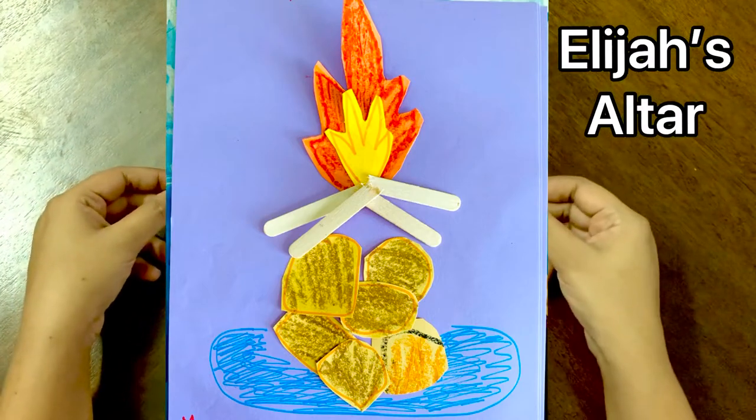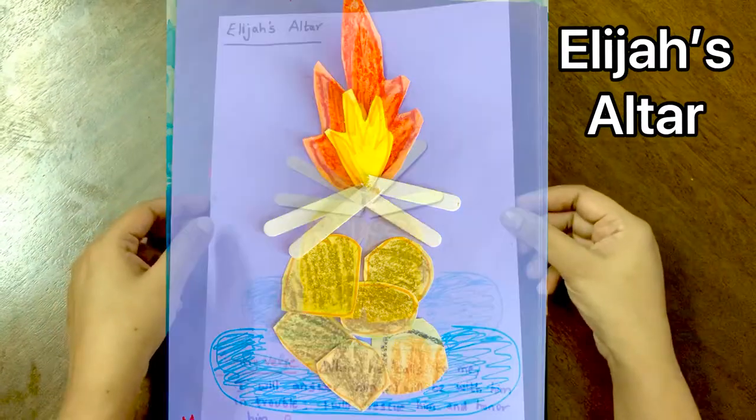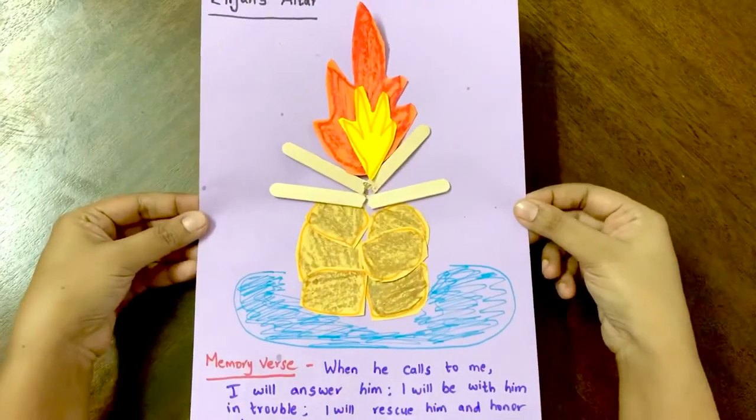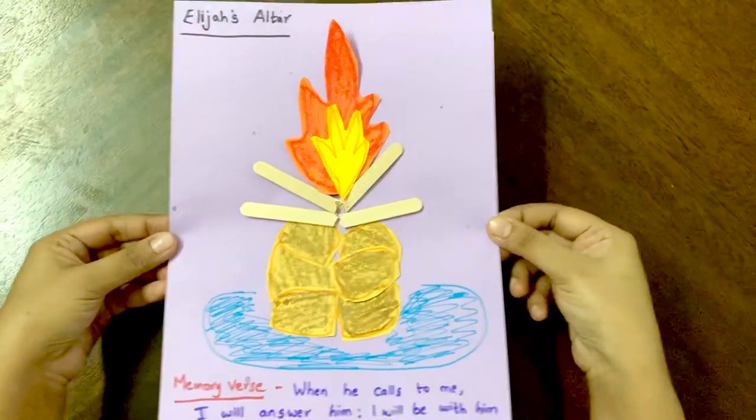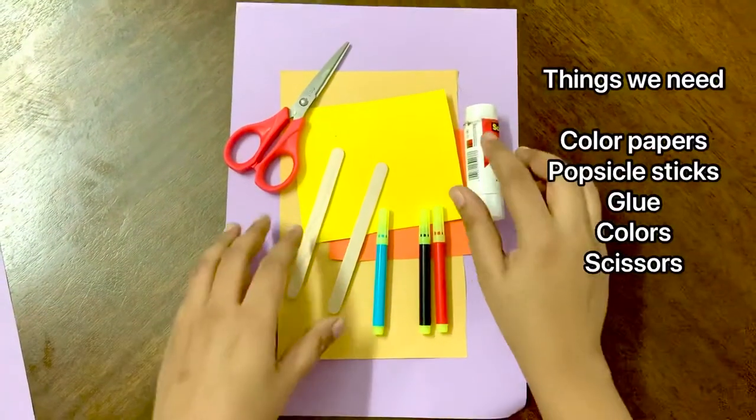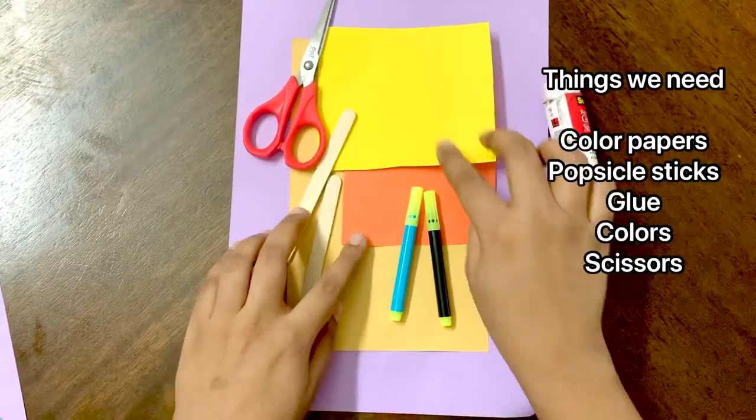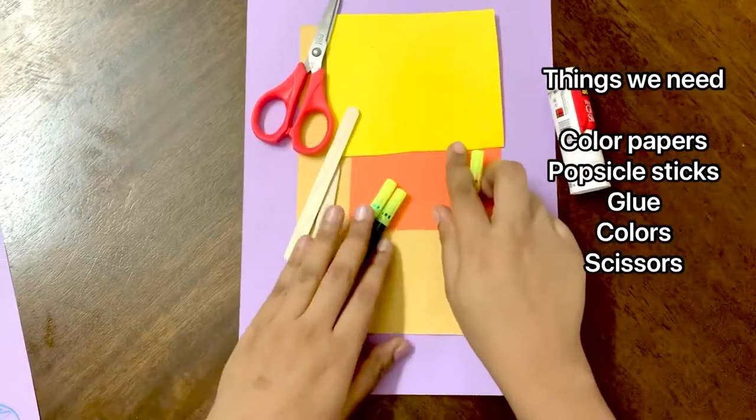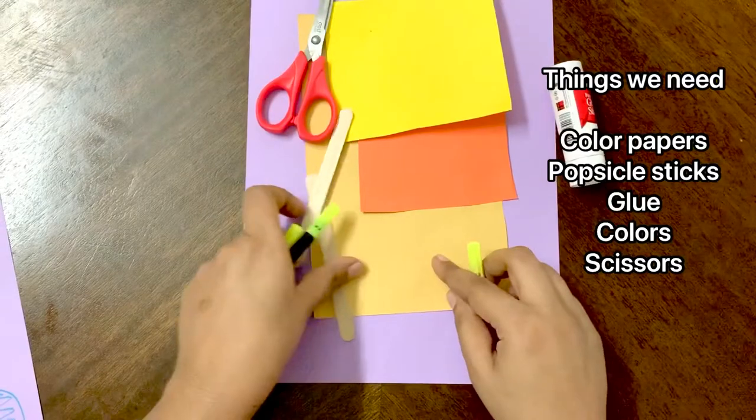Hello Kids! Today's craft is Elijah's Altar. We have done this craft and the things we need for the craft is color papers—yellow and orange for the fire and brown paper for the stones.